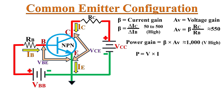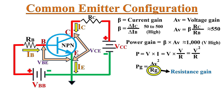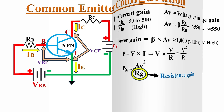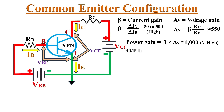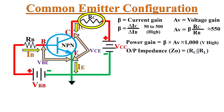Since P equals V times I, and I equals V divided by R, we get P equals V squared divided by R. So power gain PG can be written as AV squared divided by resistance gain RG, where resistance gain RG is defined as the ratio of output impedance ZO to input impedance ZI. The output impedance of the common emitter configuration equals the collector resistor RC in parallel with the load resistor RL if connected — otherwise it is just RC. Generally it is in the range of 40 kΩ to 50 kΩ, so this configuration has high output impedance.